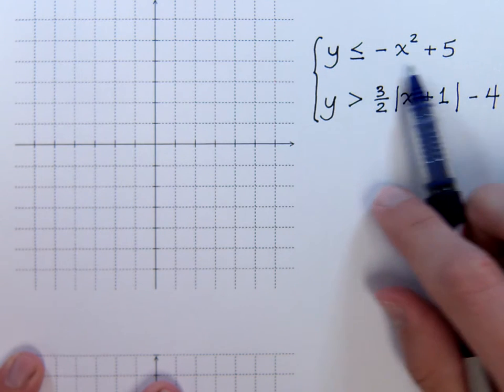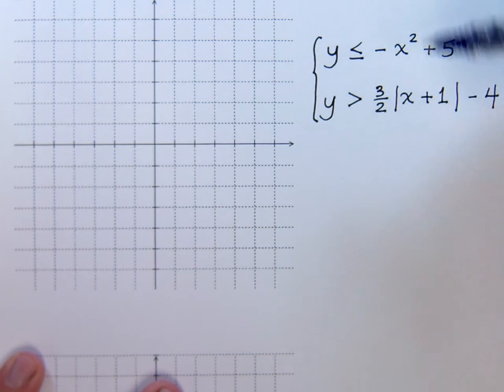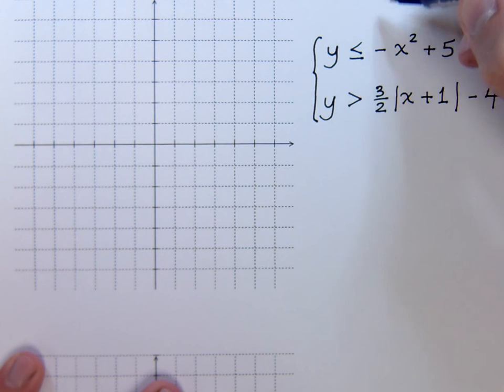Now for this first one right here, we've got to think about what the shape of this guy is. The square tells me that I have a parabola. The negative tells me that this parabola is going to be opening upside down. So I know that much about the shape so far.